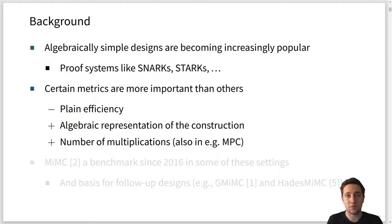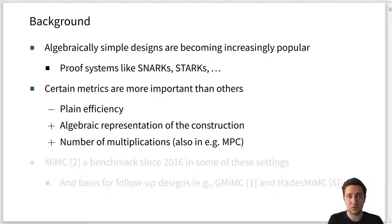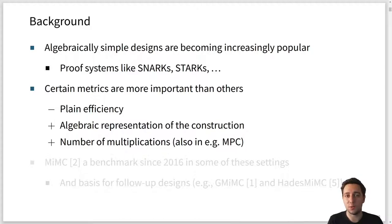Let's start with a short background section. We know from recent years that algebraically simple designs are becoming more and more popular. This is the case, for example, due to proof systems like SNARKs or STARKs, and in these proof systems or in other similar use cases, certain metrics are more important than others. For example, plain efficiency or plain encryption speed is not so important, but what is important is the algebraic representation of the construction or the total number of multiplications, which is also very important in MPC scenarios.